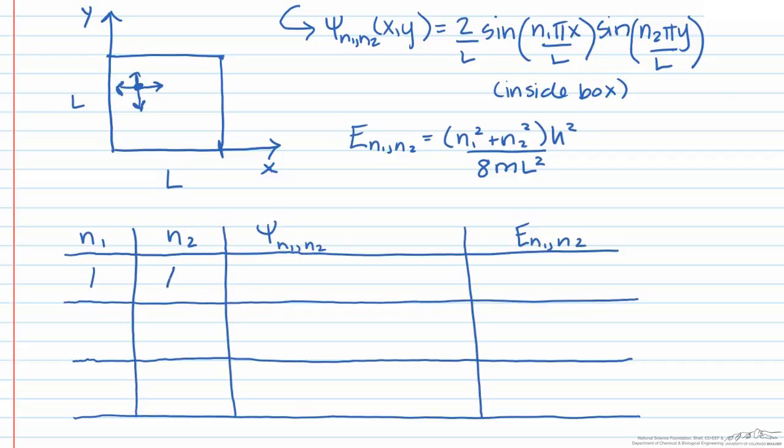Let's start with the n₁ equals 1 and n₂ equals 1 state. If we take a look at our wave function for this state, we find that it has the following form, and its corresponding energy level is equal to h² over 4mL².